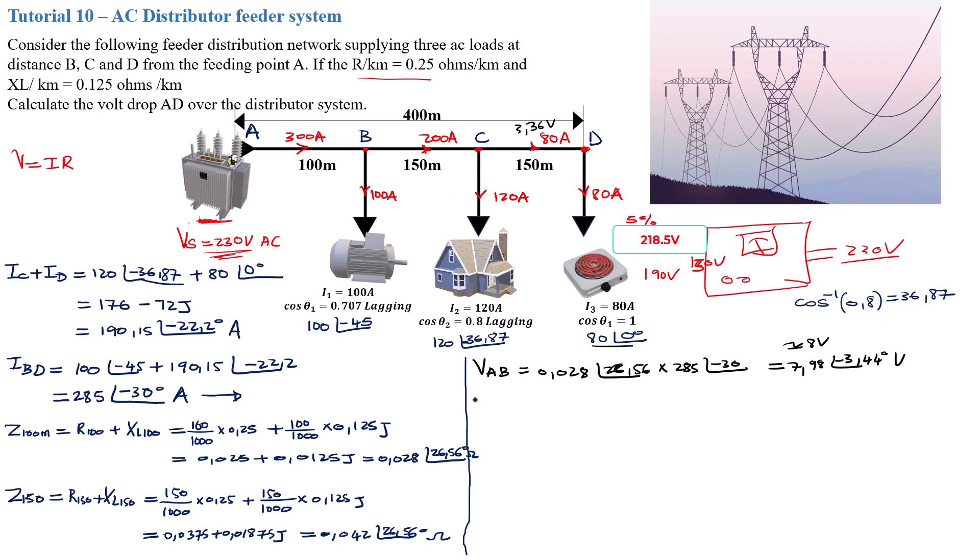Now let's go ahead and find the voltage drop on section BC. V_BC, again guys, if you find this useful please give it a thumbs up and subscribe to my channel. Now remember the current here is 200 amps, not 120. It's 200 amps. That was a combination of the 120 plus the 80 that we got here. So our current is 190 with an angle of negative 22.2 degrees.